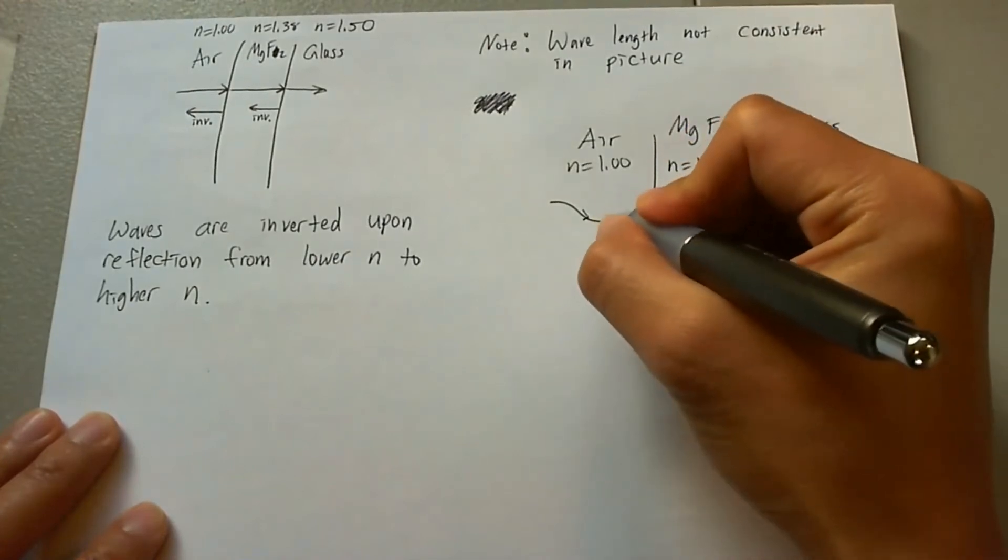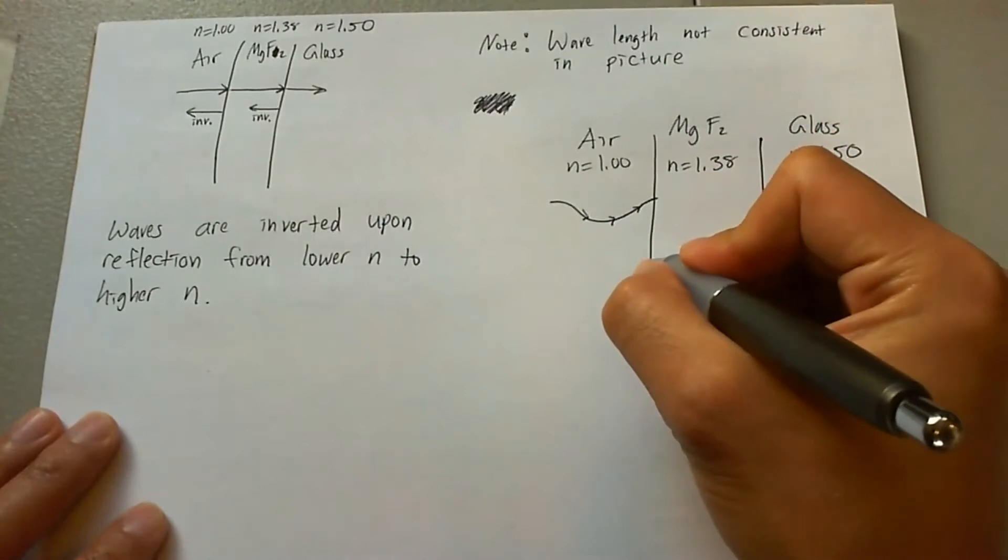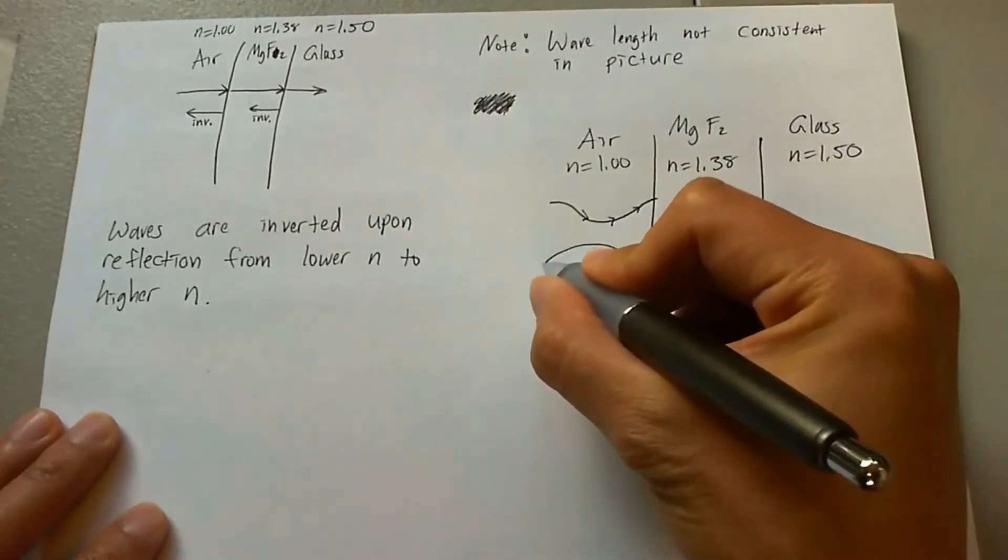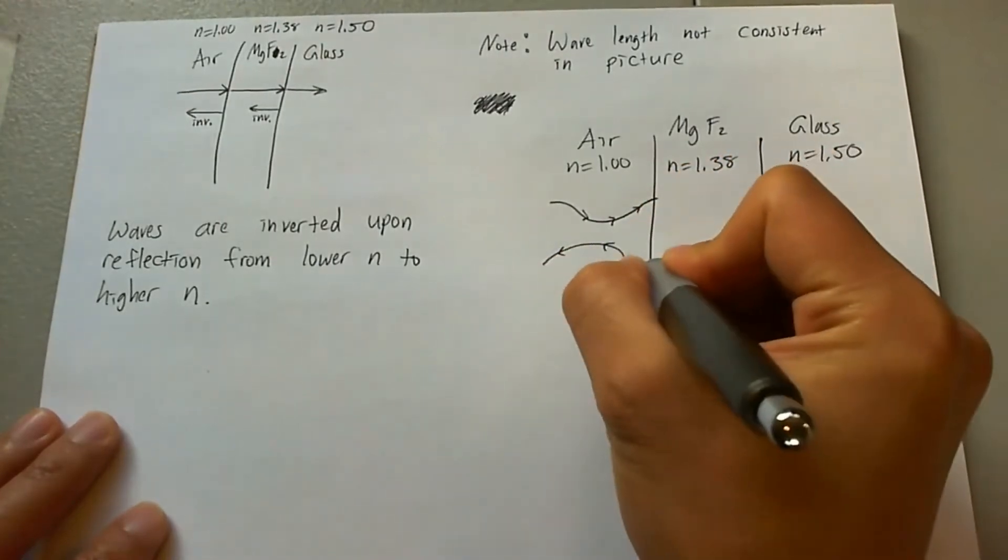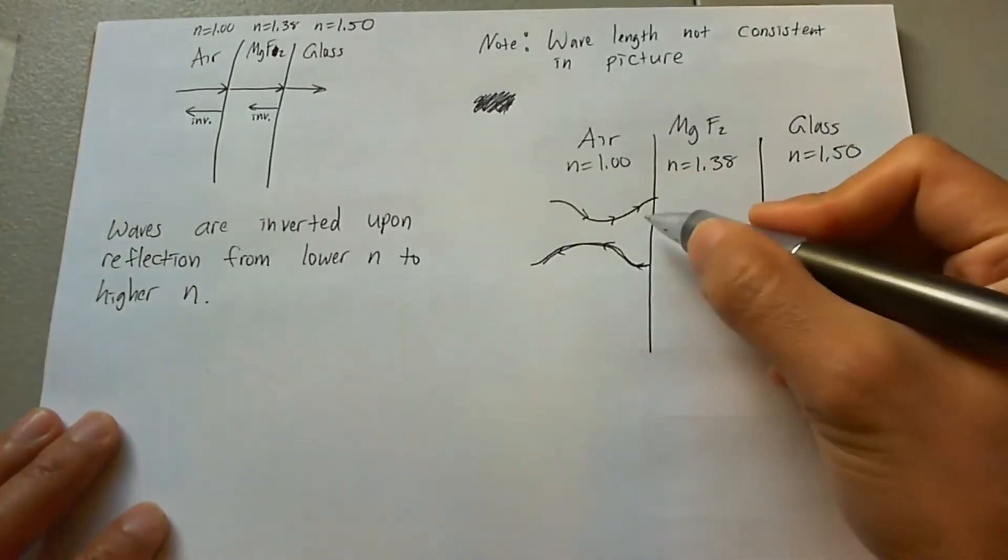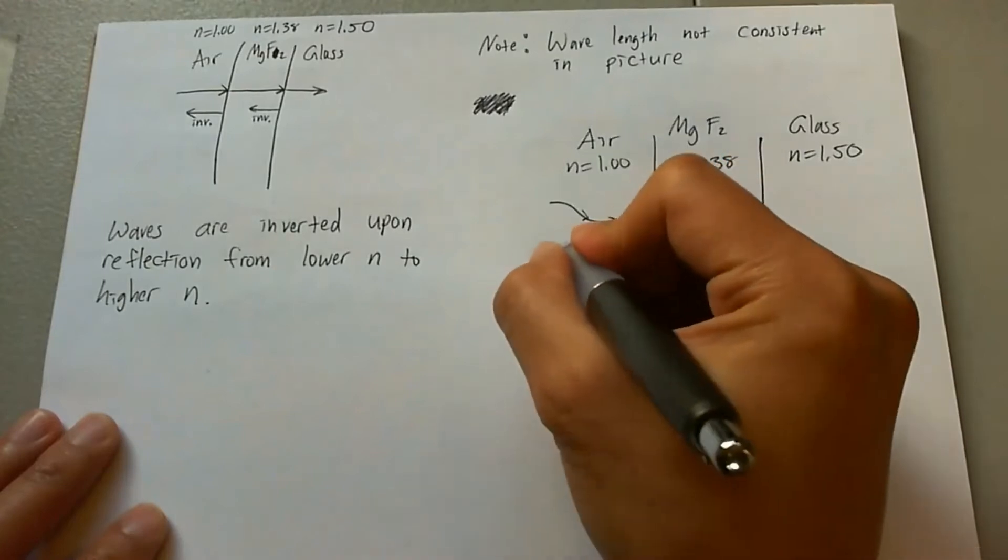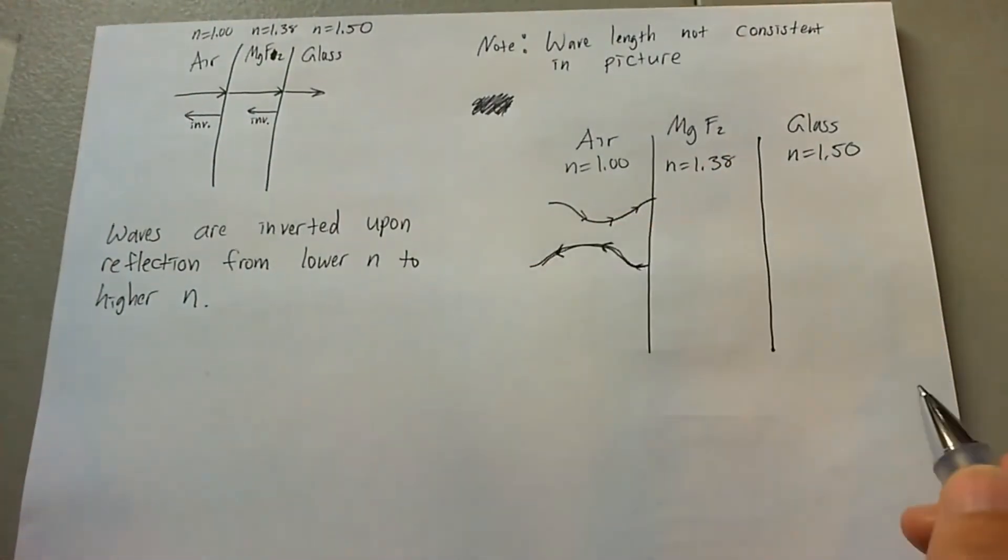So the reflected wave is then going to look like this. It's going to be inverted and kind of mimic the incoming wave, but inverted. So you'll see that in that case, it's going to interfere destructively if it were to interfere with itself anyway.